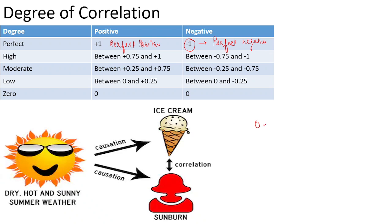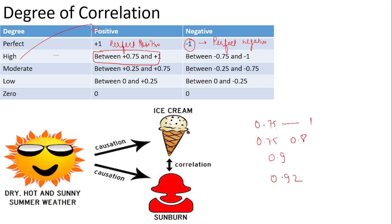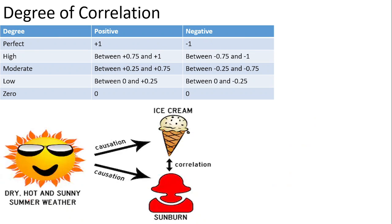If our answer is between 0.75 to 1 — that is, 0.75, 0.8, 0.9, 0.92 — any answer that is 0.75 or above and between 1, we call it high positive correlation. Similarly, if the answer is between minus 0.75 to minus 1, we call it high negative correlation. If our answer is between 0.25 to 0.75, it is known as moderate positive correlation. And if the answer is between minus 0.25 to minus 0.75, it is moderate negative correlation. If our answer is between 0 to 0.25, it is low positive correlation. And if the answer is between 0 to minus 0.25, it is low negative correlation.